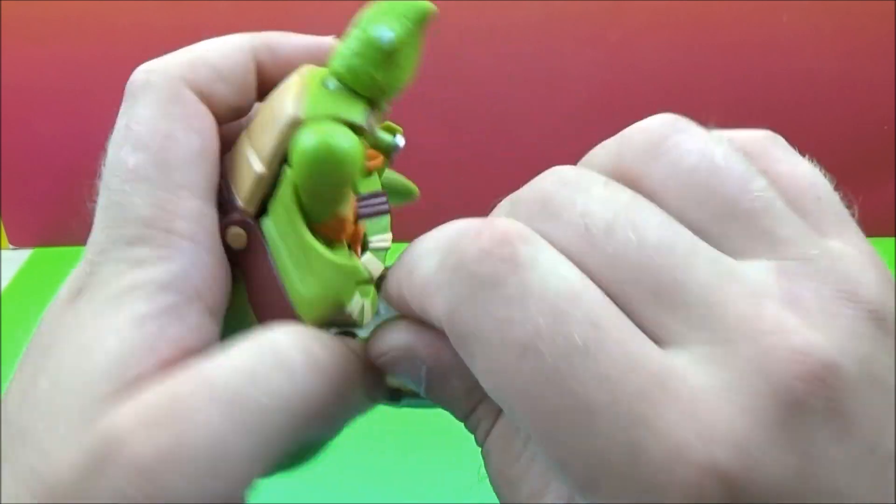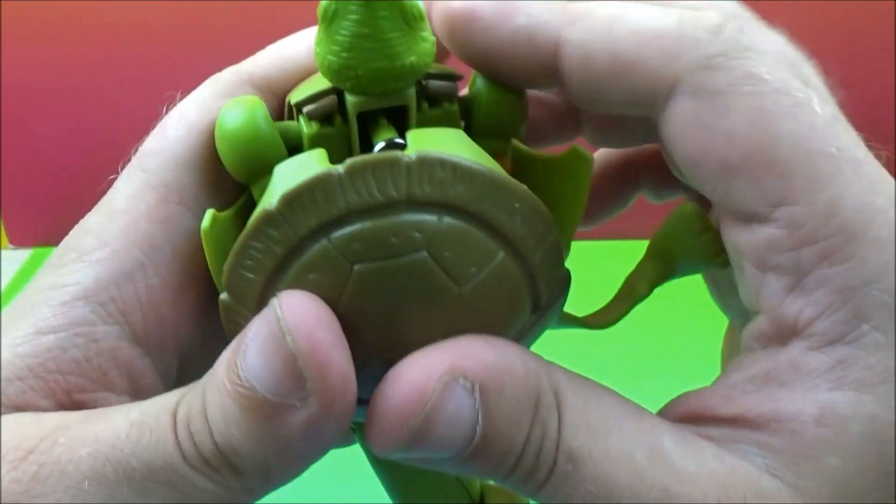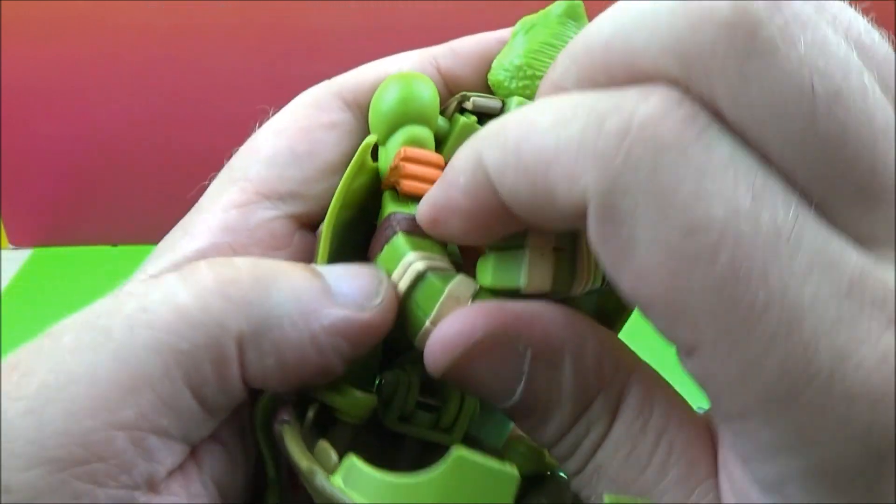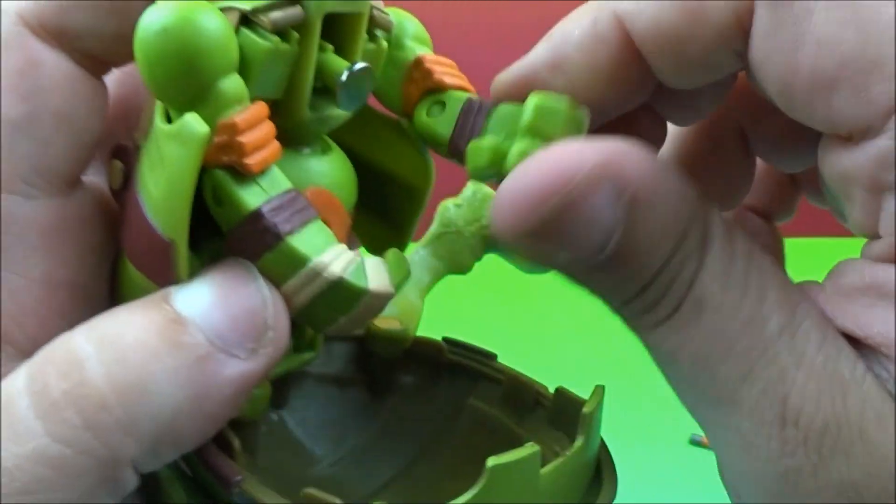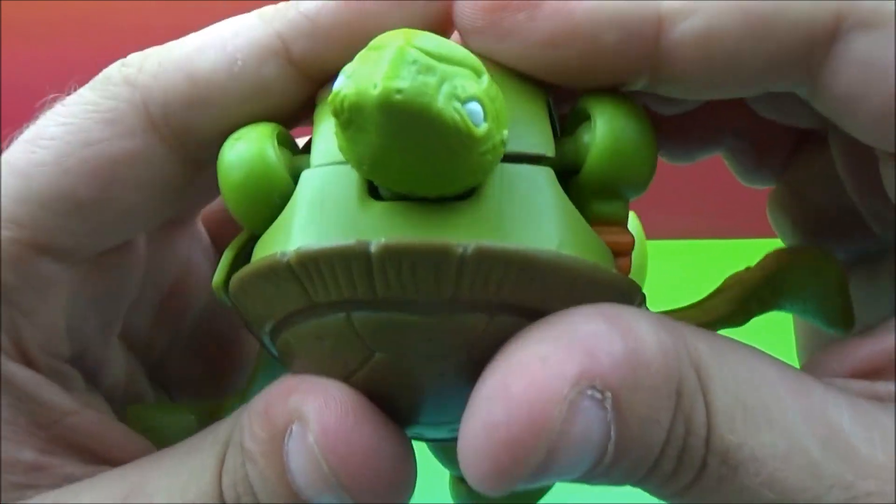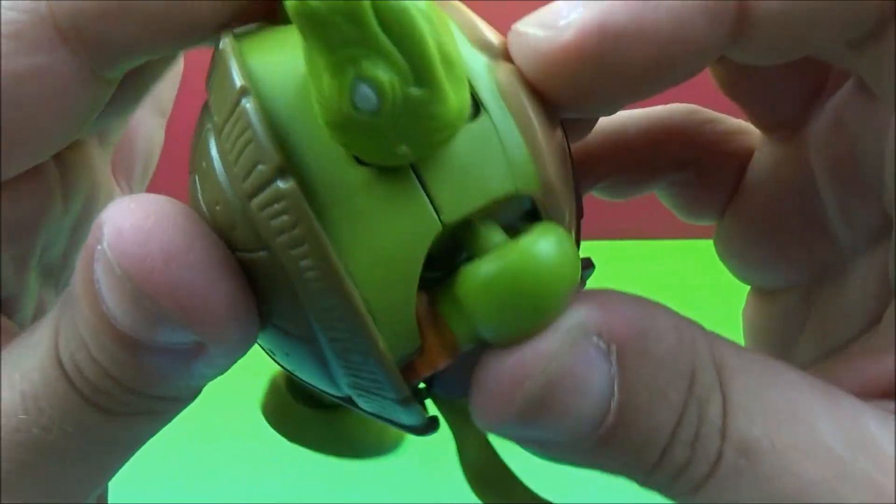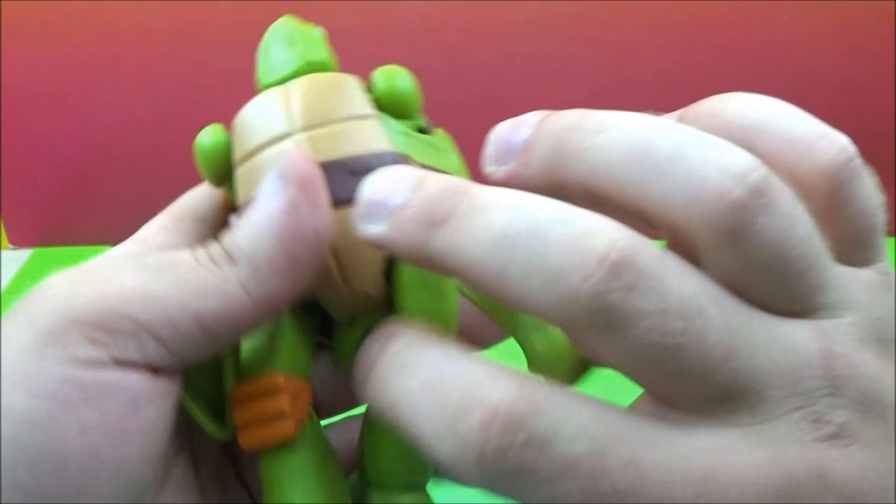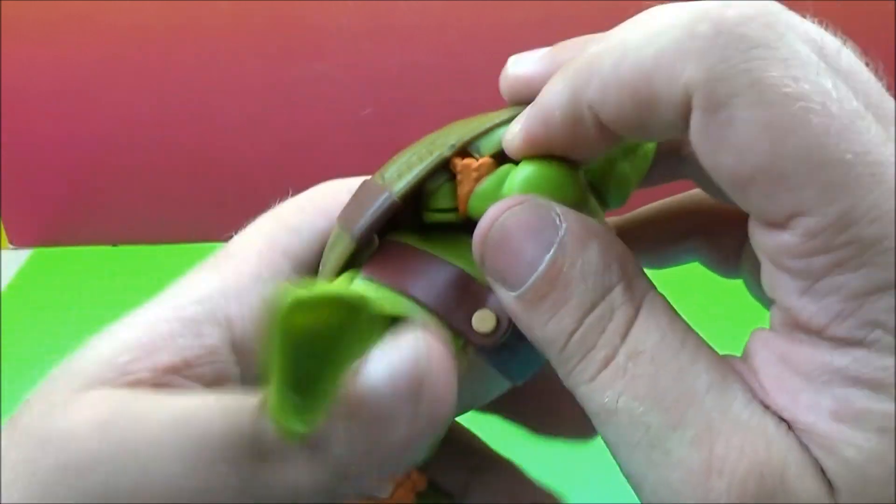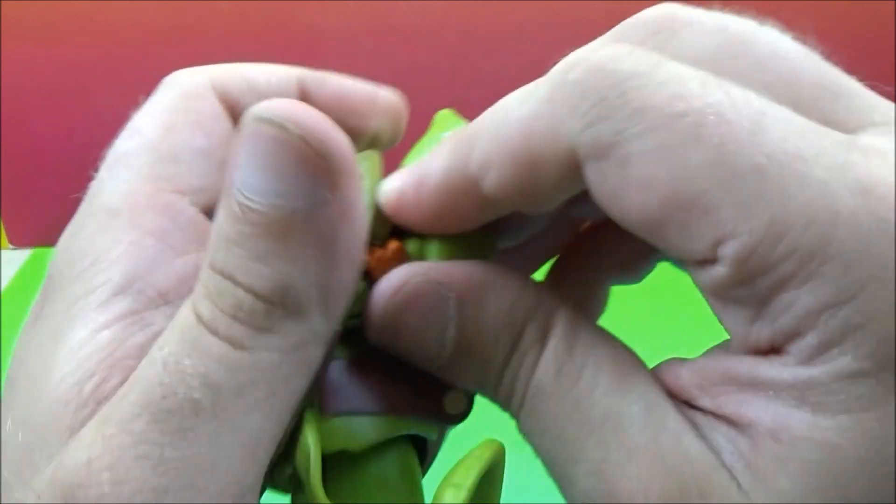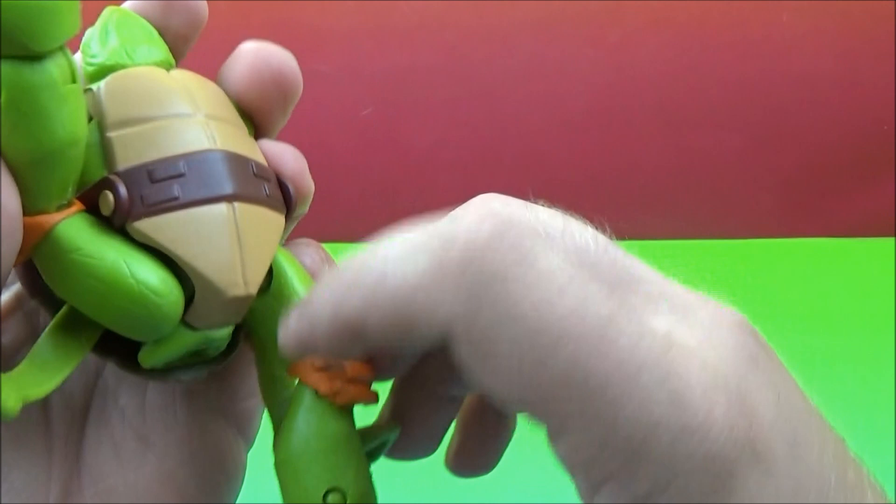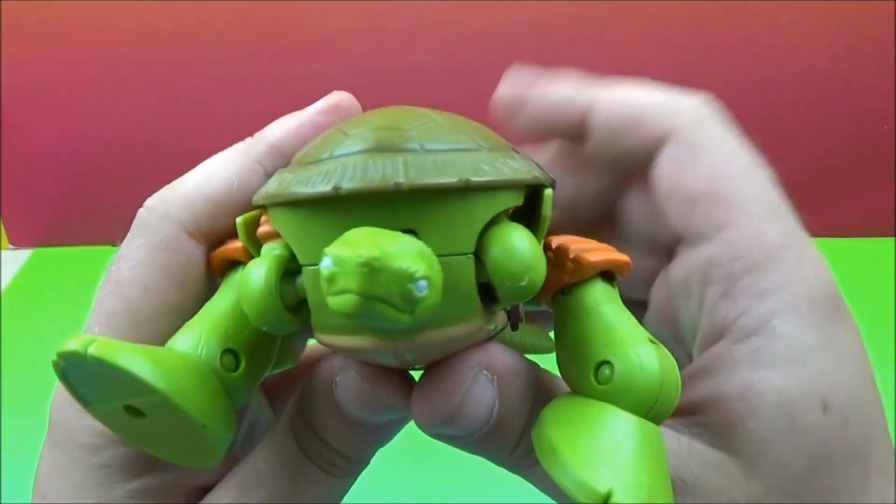Arms in, legs out. Fold the shell back up. Make sure that everything here is folding correctly. Okay, there we go, all locked and ready to go. Feet out, legs up. Let's get these sides tucked in. That one's inside. There we go, the legs up here. There you go, there's Michelangelo.